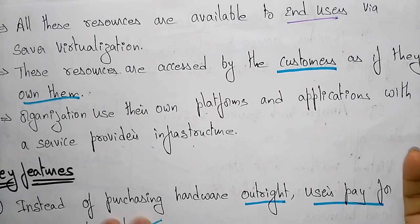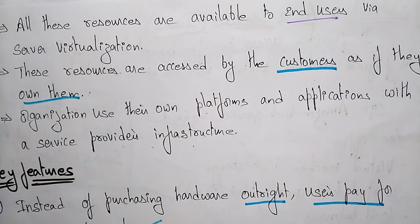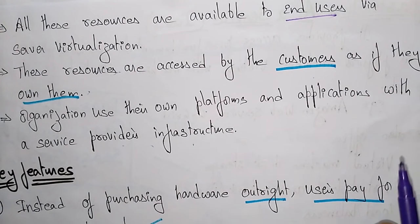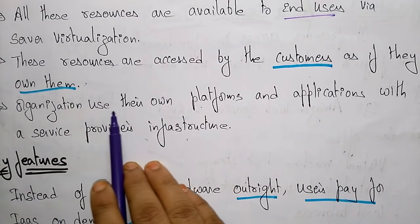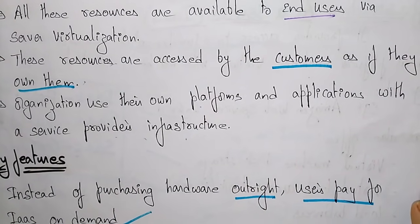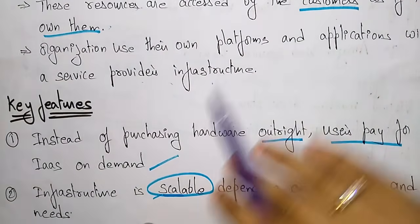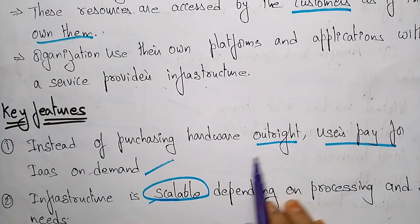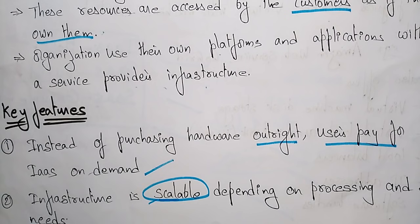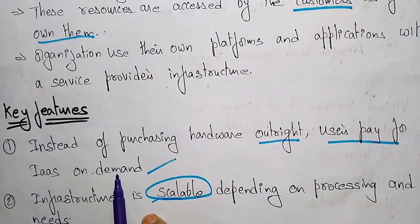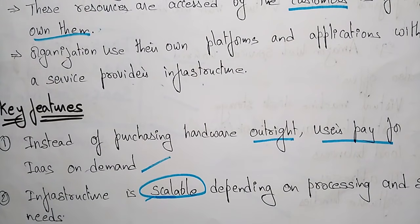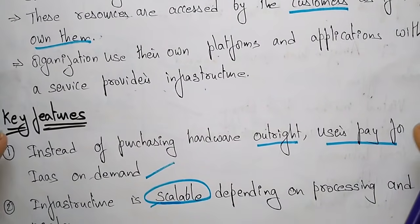The resources provided by Infrastructure as a Service are accessed by customers as if they own them. This is based on usage — based on the demand of the customer, they can own the resources provided by IaaS. The organization uses their own platforms and applications with the service provider's infrastructure. A key feature: instead of purchasing hardware outright, users pay for IaaS on demand. Rather than buying their own equipment, organizations use IaaS on demand by paying the cloud provider.